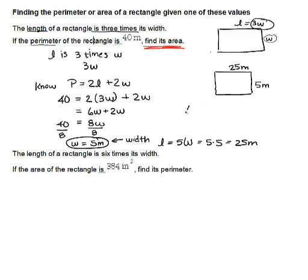They're asking us to find the area. So the area, if you remember, our formula is length times width, so it's simply going to be 25 times 5, which is going to give us 125, and the units for area is meters squared.